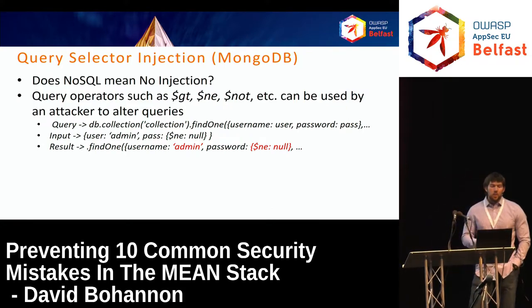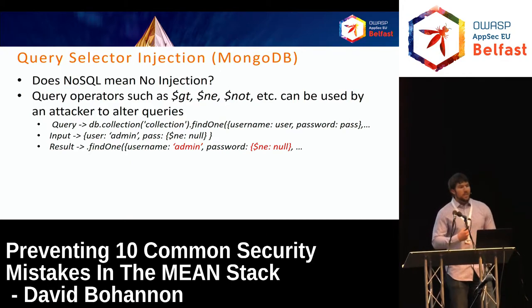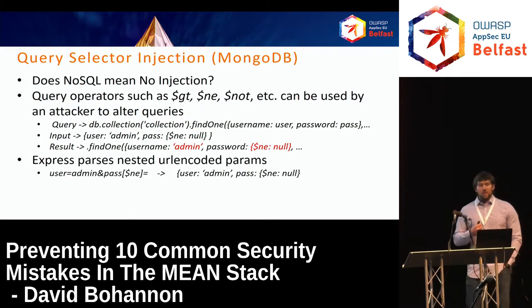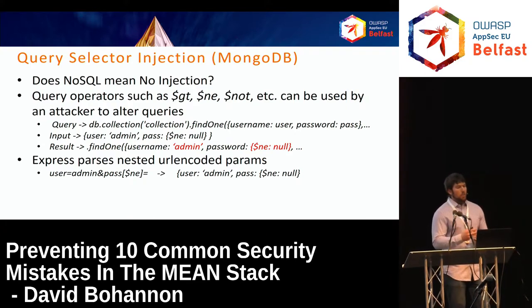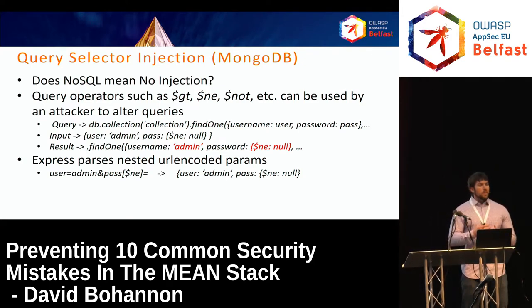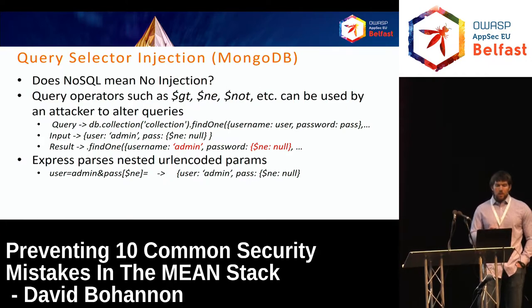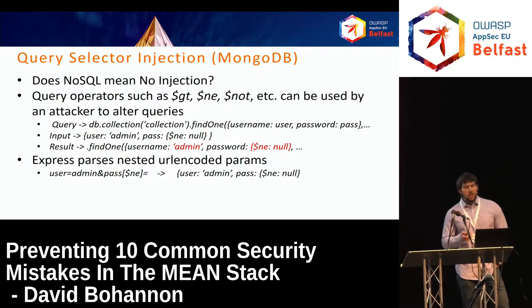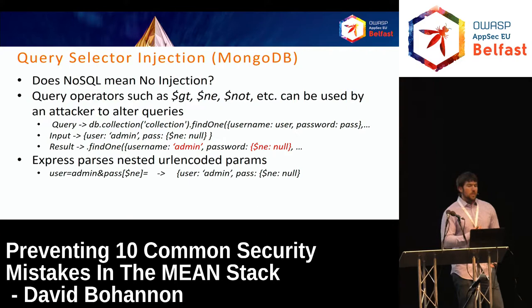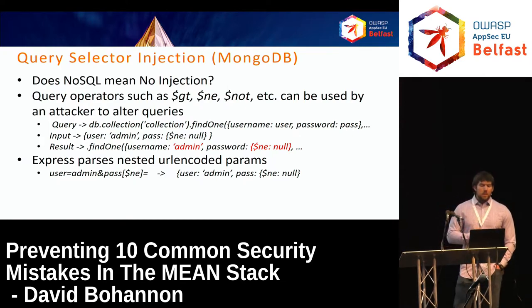If the user inputs an object where the user is 'admin' and the password is the object not equal to null, the result is a query looking for the username 'admin' and a password that is not equal to null — which always returns true, allowing authentication without valid admin credentials. Express helps enable this: when using the MEAN stack, Express automatically parses nested URL-encoded parameters, so a URL-encoded parameter like 'pass[$ne]=' gets translated to the password object with $ne equal to null, injecting query operators into the findOne statement.